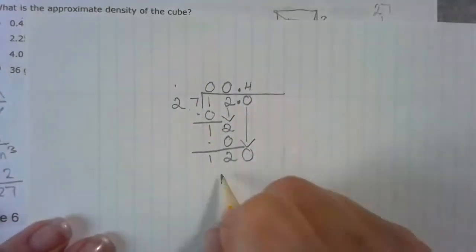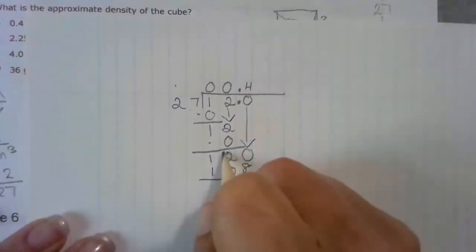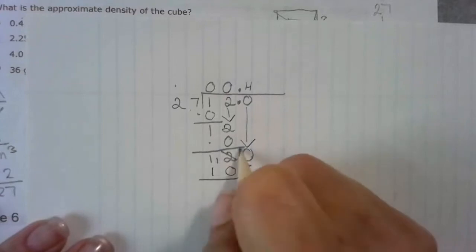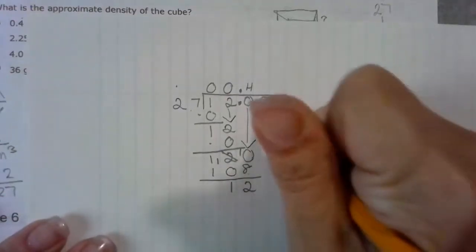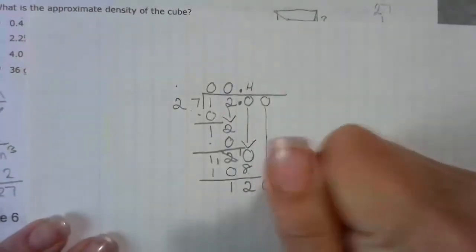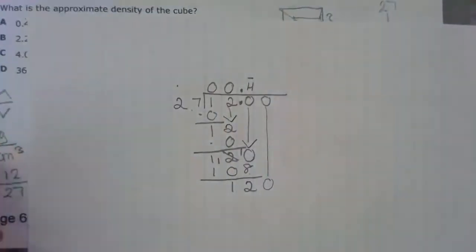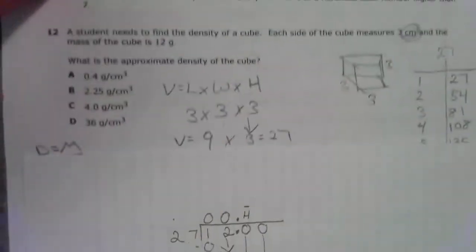I cannot subtract 0 from 8. I've got to borrow from my neighbor. And it looks like I'm going to have repeating 4s. So the answer is A.